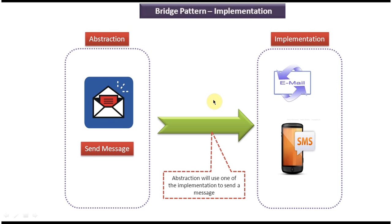Now we will see the scenario where we can use the bridge design pattern. In the bridge design pattern there are two layers: the first layer is the abstraction layer and the second layer is the implementation layer. If I make any changes in the implementation layer, it won't affect the abstraction layer, and vice versa.